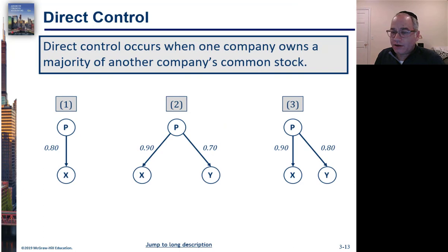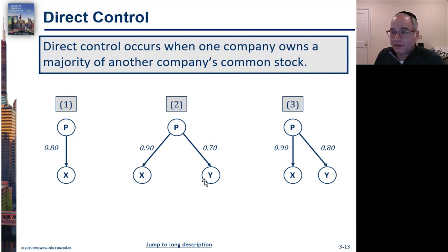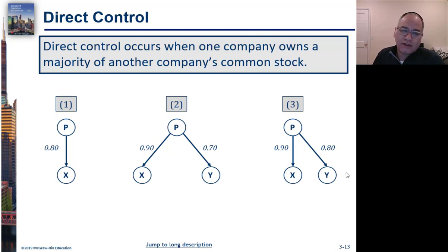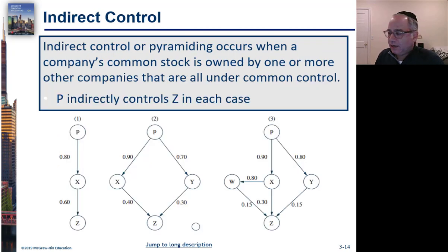Here's direct control. In example one, the parent owns X at 80% — that's obviously control. In two, they own 90% of X and 70% of Y. In three, they own 90% of X and 80% of Y. And the reality is you could have 50 or 100 subsidiaries. What usually happens is they tend to pyramid, and in a medium-sized company you could have four or five different levels in this pyramid.